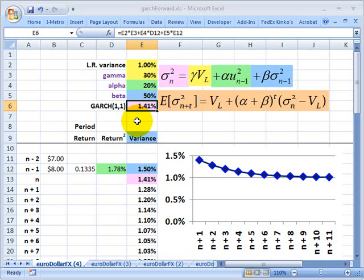Then I've got a GARCH(1,1) estimate for today's variance. I just made up some numbers here. This could be a stock, for example, that on day n minus 2, that would be two days ago, was $7, then yesterday was $8, such that the periodic return was 13% and change, and then we square the periodic return.